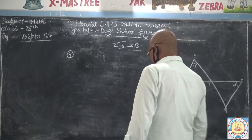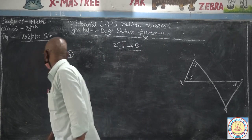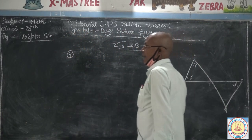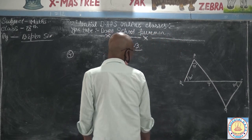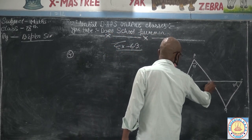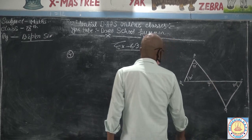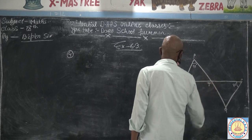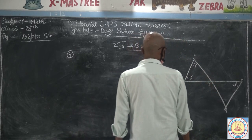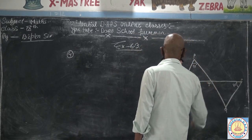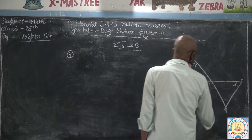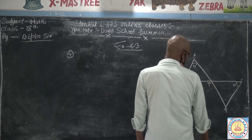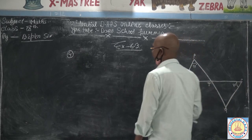Dear students, question number four. PQ and RS are two lines that intersect at T. Angle RPT is equal to 95 degrees, angle PRT is equal to 40 degrees, and angle QST is equal to 75 degrees. Find angle SQT, which equals Y.